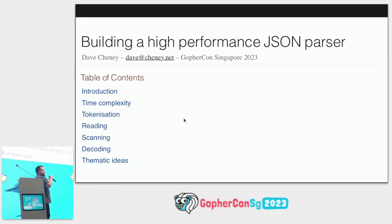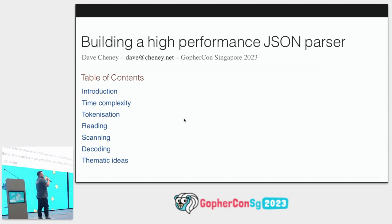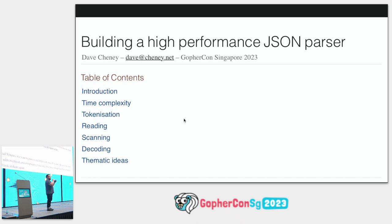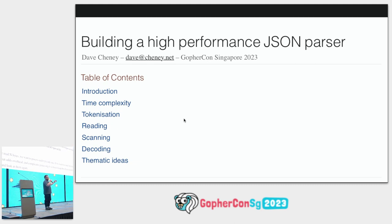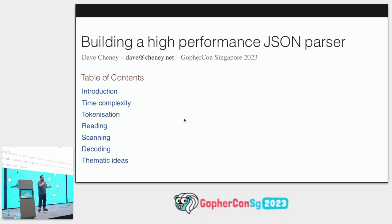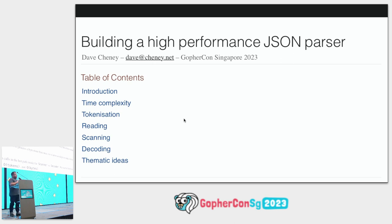JSON is a hard format to parse because it doesn't have length markers. To know how much JSON to read, we have to read it all. If we want to get the 1000th element from an array, we have to read the 999 that come before it. So the lower bound on how long this takes is how long it takes to read the input — plus parsing through the JSON state machine to figure out what the tokens are.